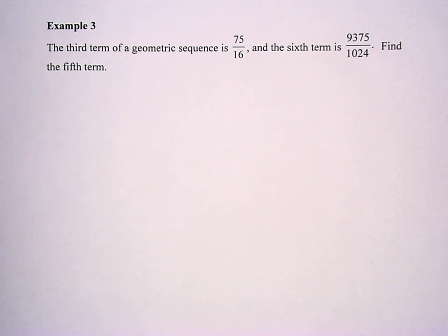All right, so here's example three. This is a little bit of a trickier problem because it's given us a third term and the sixth term and we got to find the fifth term. It doesn't tell us the first term, doesn't tell us the common ratio. We have to figure all that out on our own.